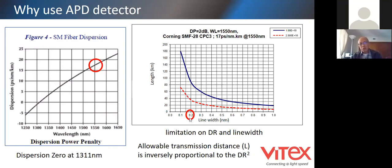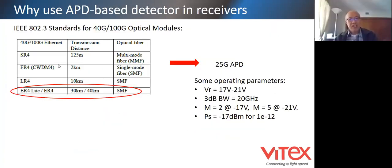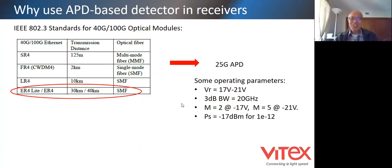For a very standard spectral width of around 0.2 nm, you can see the 25G link can reach about 20 to 30 kilometers, maybe 40 with FEC. Looking at the standard, you can see ER4 lines at 30 and 40 kilometers - roughly the same thing. So here comes the 25G APD. I just want to set the stage so we can talk about the APD.